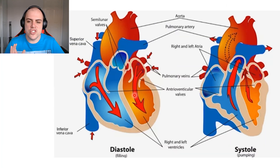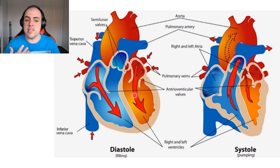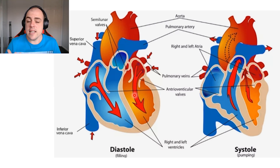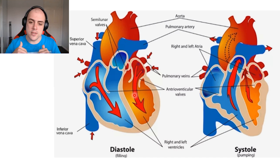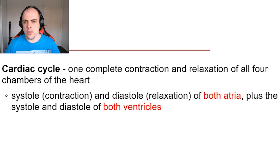The first thing I want to do is separate the heart's activity into two main stages. These are called systole and diastole. Systole refers to the heart when it is in contraction — when it's tense and pushing blood. Diastole is when the heart is relaxed; this is more so the filling stage. Together, systole and diastole comprise the cardiac cycle.